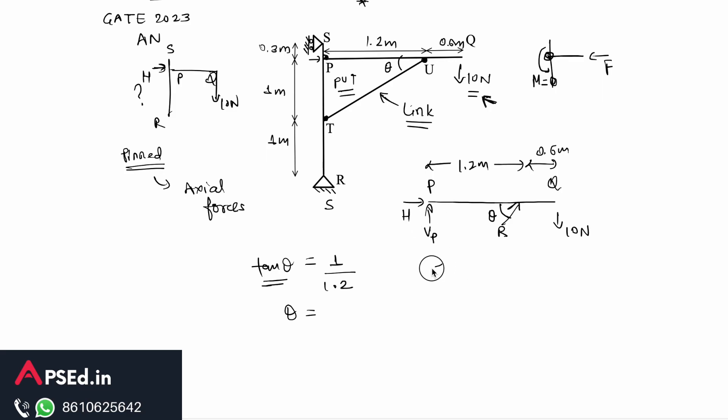So if we write the summation of moments about this point P, it is a static equilibrium equation and it's a static structure, so the summation of moment about any point is zero. If we write summation of moments about point P is equal to zero, we are writing about this point so H and this Vp, these both are passing through point P so they will not contribute to any moment. So we have this force of 10 Newton at Q and we have this force R at this point U. We will have, let's say we are taking clockwise as positive, so we have 10 times 1.8.